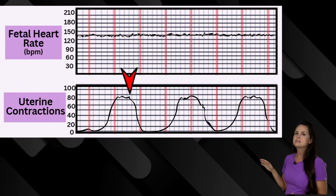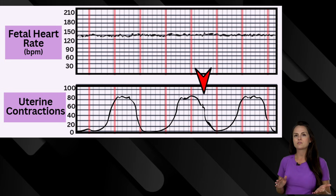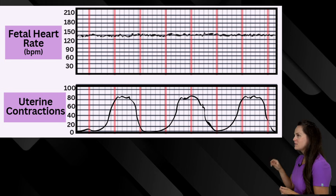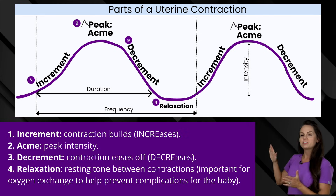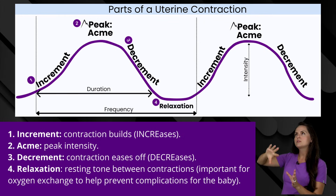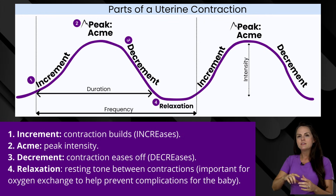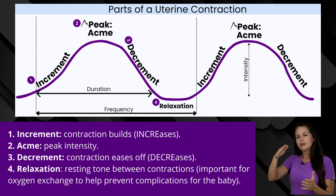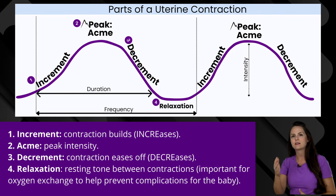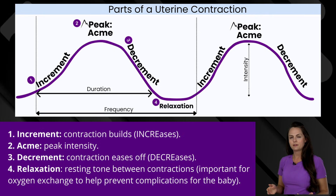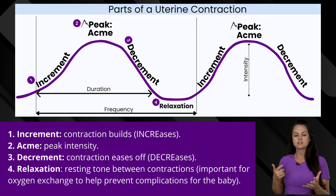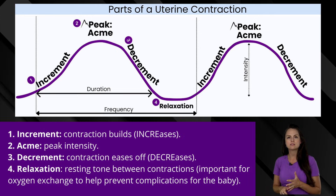Below that, you're going to see another line representing mom's contractions. Let's talk about the parts of a contraction. On the monitoring, you'll see the increase of the contraction when it's coming on and building — this is the increment. Then you're going to see the peak of the contraction, the acme, and then where the contraction starts to let off — the decrement. Then you can see the relaxation period. This section allows you to see mom's contractions, their frequency, intensity, and so forth.